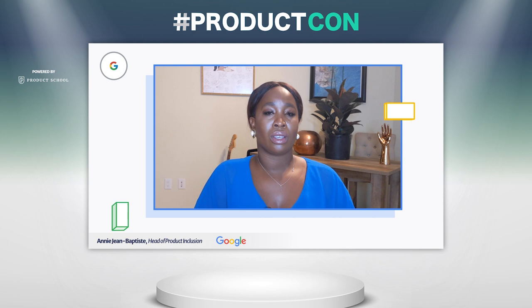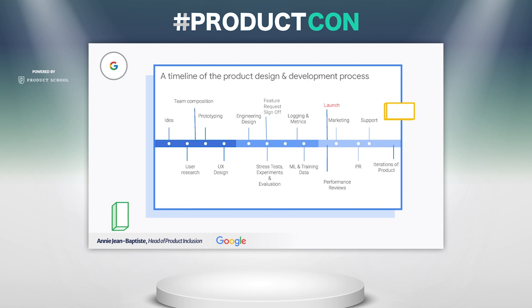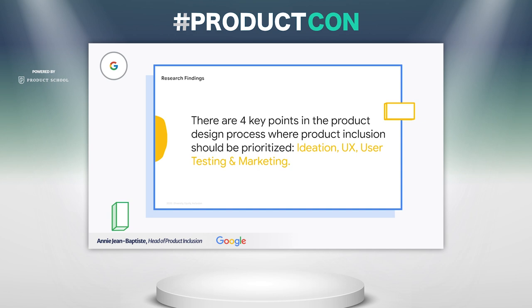I'd like to walk you through some of the findings on the research for the business case for inclusion that we've been doing over the past year. The first finding is that there are four main touch points in the product inclusion system: ideation, user research and design, user testing, and marketing phases. Teams came back to these touch points time and time again, and it really affected their output. It was really important that they took their learnings and cascaded them throughout the product design process.